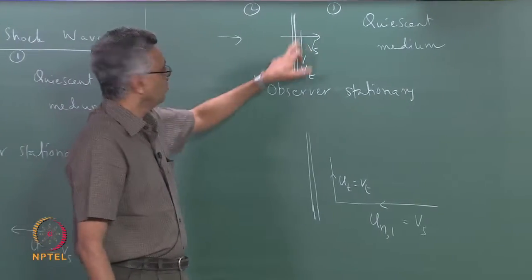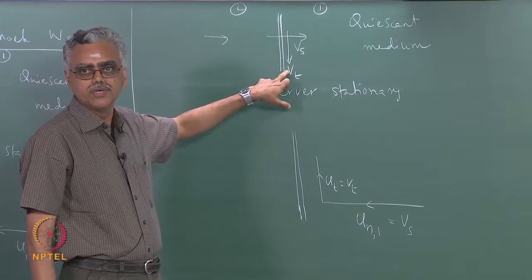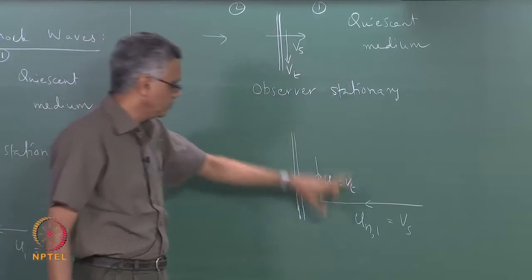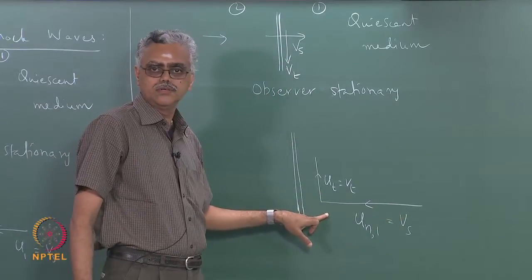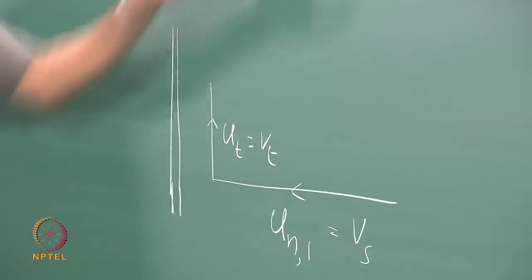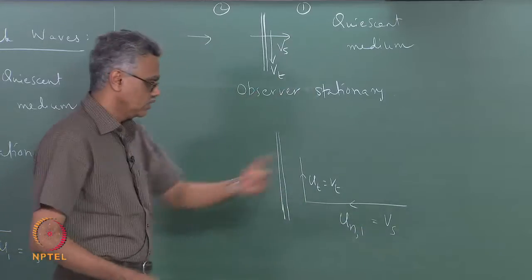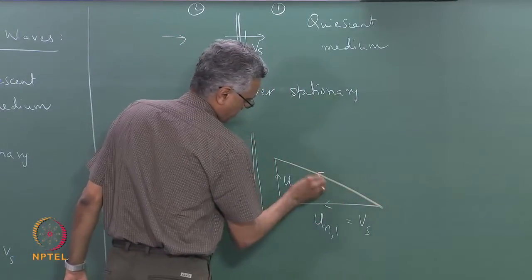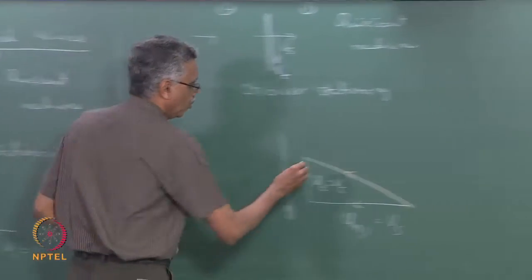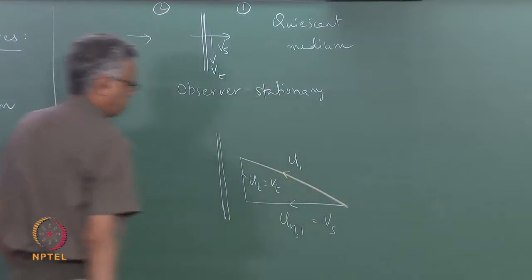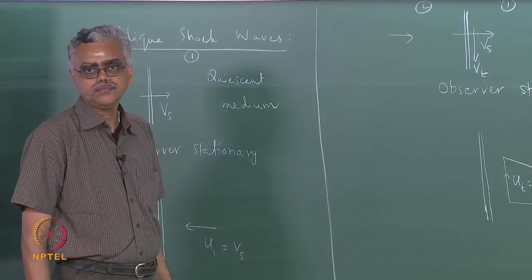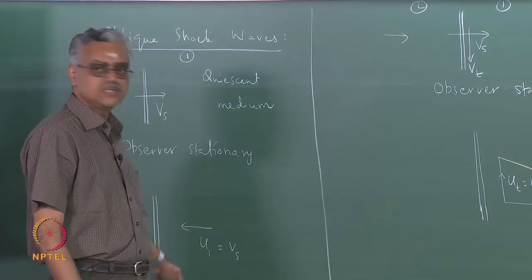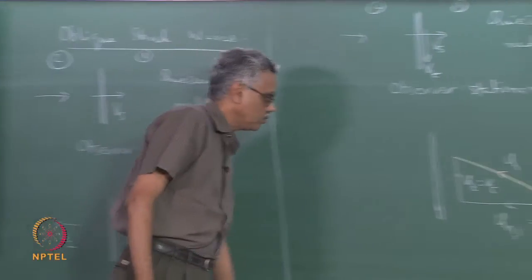The observer has two components of motion: one along the shockwave, so the fluid acquires that in the opposite direction — the tangential component; and one normal to the shockwave, so the fluid acquires that velocity in the opposite direction — the normal component. The resultant velocity vector is u1. Notice that u1 is not normal to the shockwave here, whereas in the normal shockwave case u1 was normal to the shockwave.